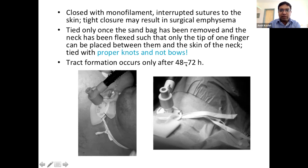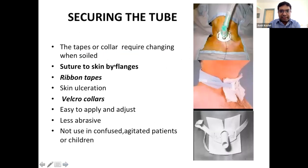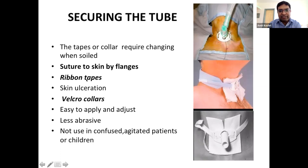Tract formation occurs after 48–72 hours, but the tract matures at 5–7 days. The first tube change happens at 72 hours. Even a small T-piece for oxygen delivery has weight that can slightly displace the tube. For dressings, use a cut gauze piece with betadine. Ribbon tape, velcro collars are options — velcro collars are easy to apply, adjust, less abrasive, and better for confused or agitated patients.